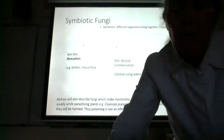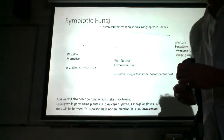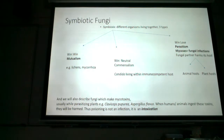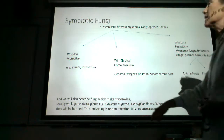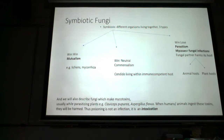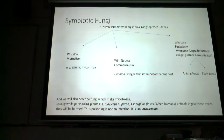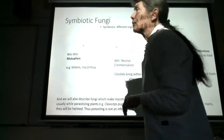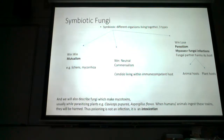Our two examples of fungi involved in mutualistic relationships are lichens — symbiotic relationships between fungi and a photosynthetic partner, either cyanobacteria or algae — and mycorrhizae, where fungi form a symbiotic relationship with plants, specifically colonizing the plant roots.